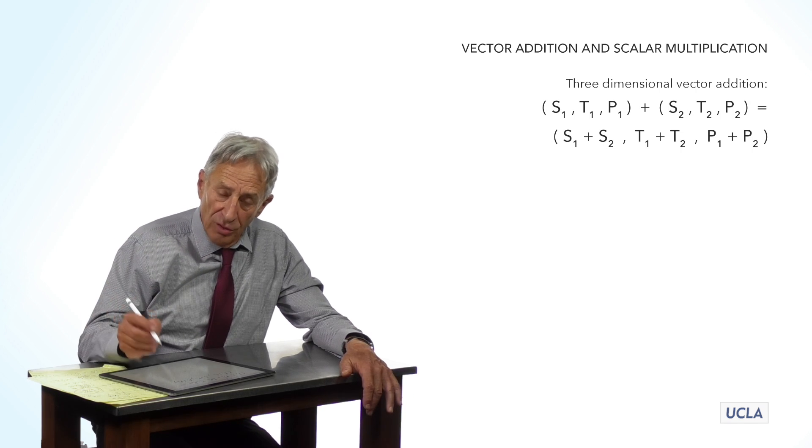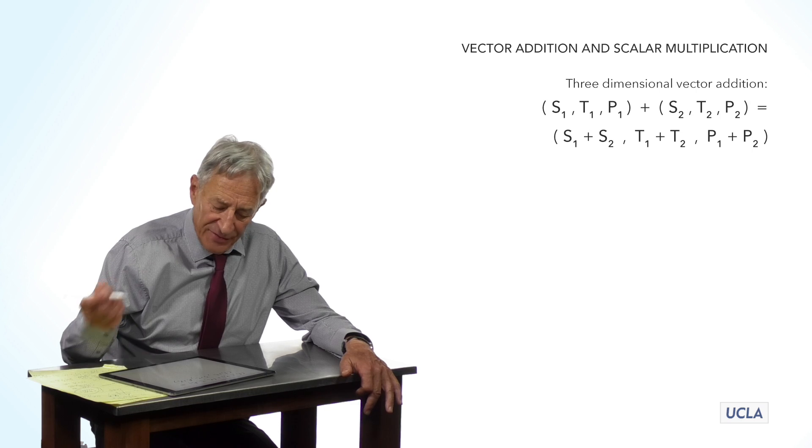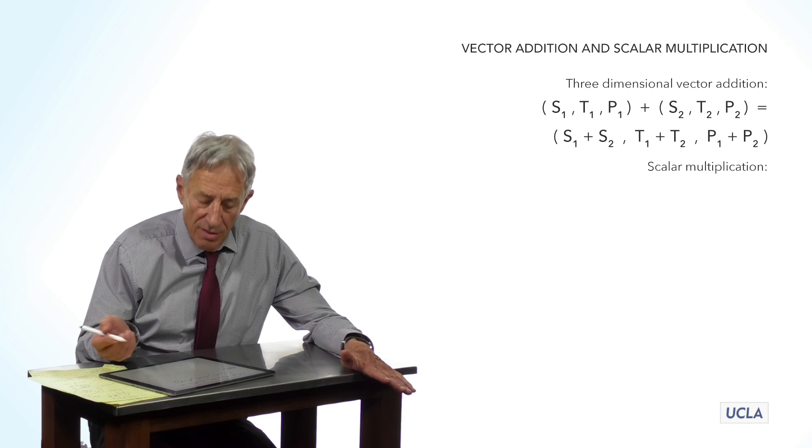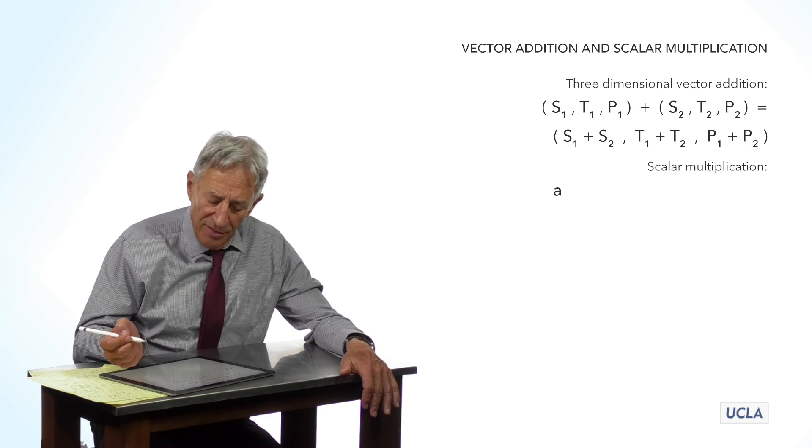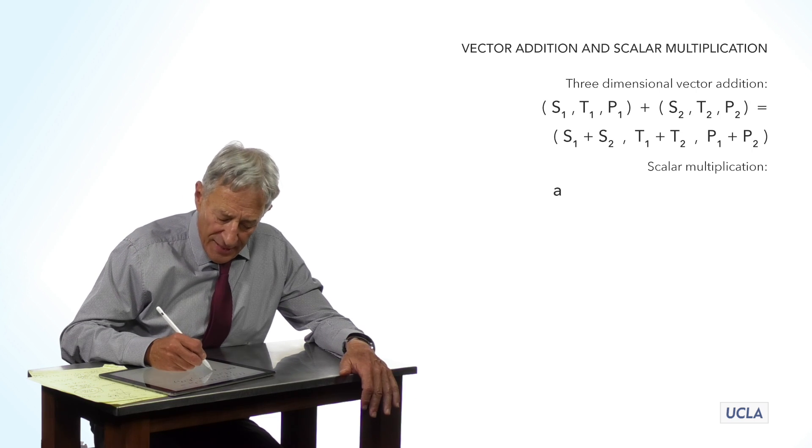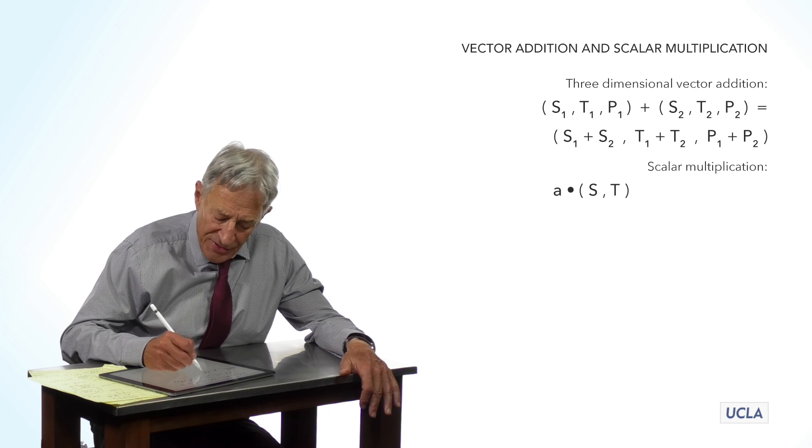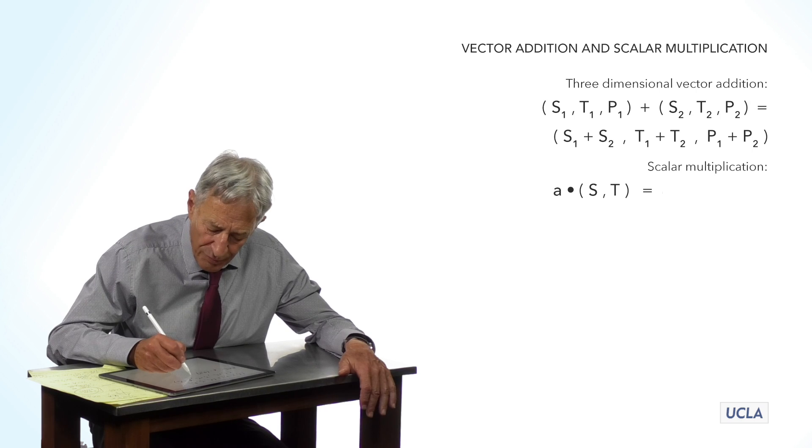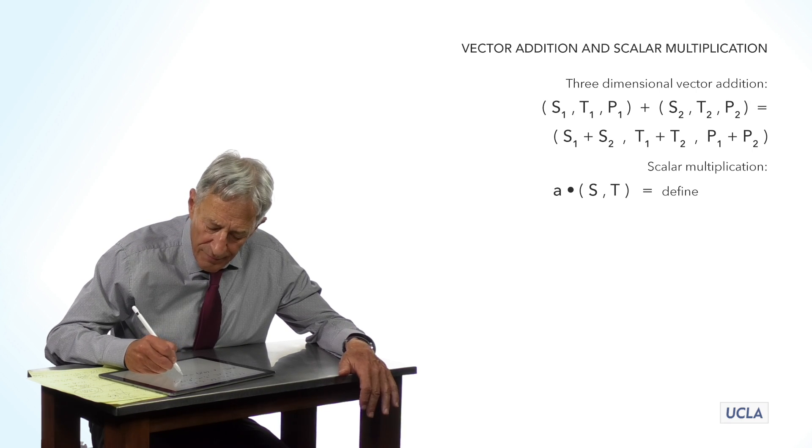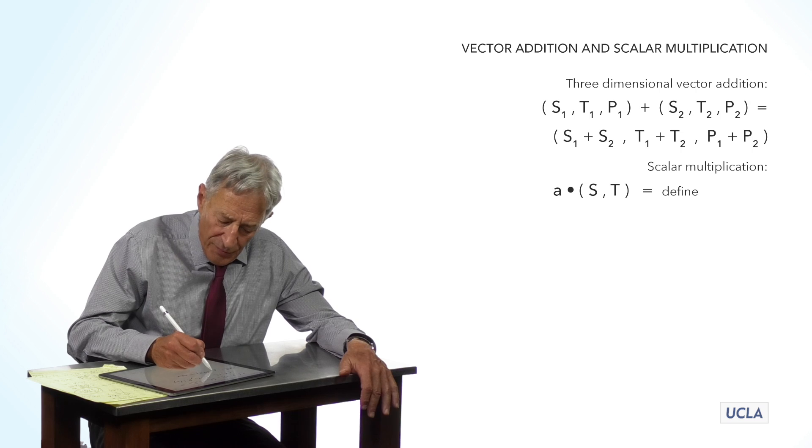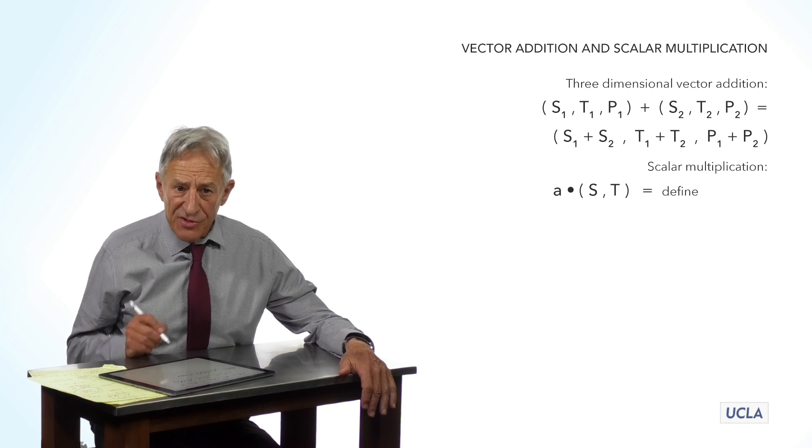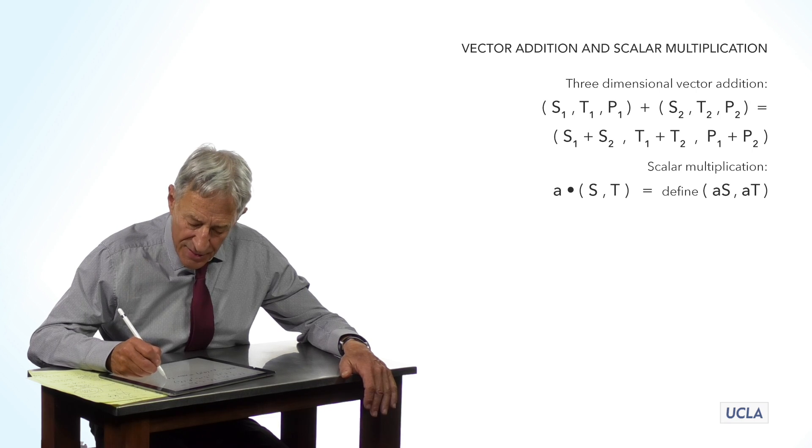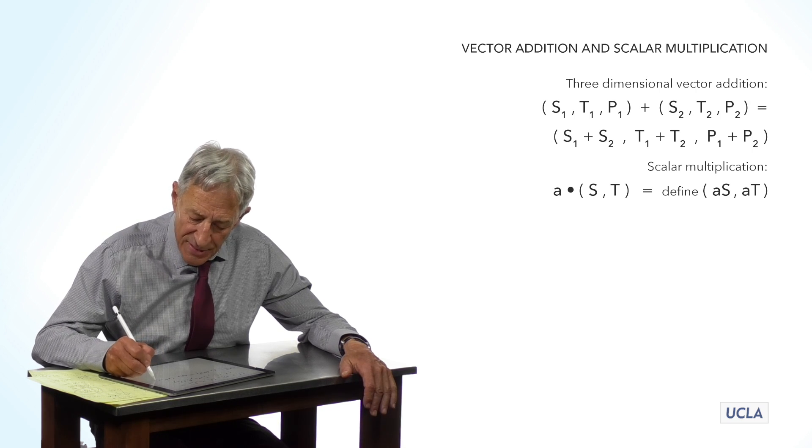Okay, what about the second rule, the multiplication of a vector by a scalar? If A is a scalar, and S2 is a two-dimensional state vector, we define A times S2 as A times S and A times T.